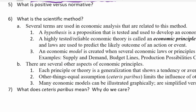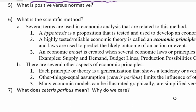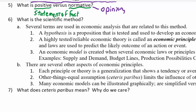Now let's talk about some definitions. What is the difference between a positive statement and a normative statement? A positive statement is sometimes called a statement of fact — but more precisely, it's a statement that is either right or wrong and is testable. A normative statement is an opinion or a value judgment that is not testable — there's no way to see if it's right or wrong by collecting data.